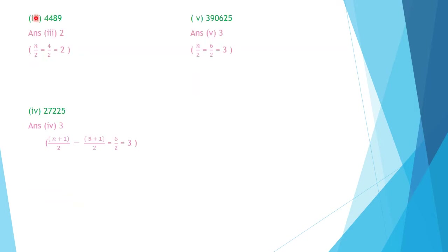Question number 3: 4,489. It has 4 digits, and 4 is an even number. So, number of digits in the square root is n by 2, equal to 4 by 2, equal to 2. The square root of 4,489 is 67, and 67 has 2 digits only.